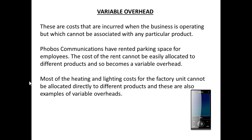In contrast, variable overheads are costs that are incurred when the business is operating but you can't actually associate them with a particular product. For example, if there is parking space rented for employees, you can't relate that cost to the phones you're producing — so that becomes a variable overhead. The most common variable overheads, particularly in small businesses, are heating and lighting costs, because it's difficult to allocate those directly to products. So we have to find other ways of allocating variable overhead.